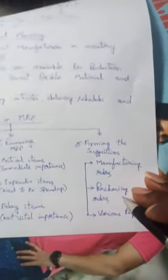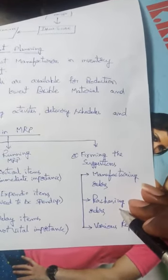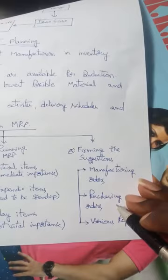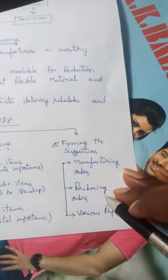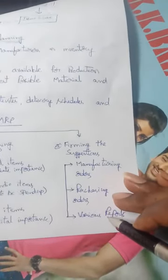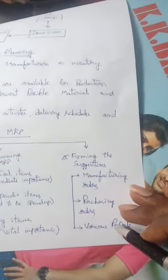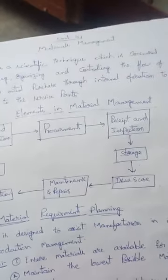As per manufacturing orders, they take consideration and purchasing orders — meaning collection of raw materials from different suppliers — and various reports from market updates and other scenarios. This is MRP — Material Requirement Planning — in operations management. The flow of raw materials plays a very vital role in the manufacturing of particular products. Thank you.